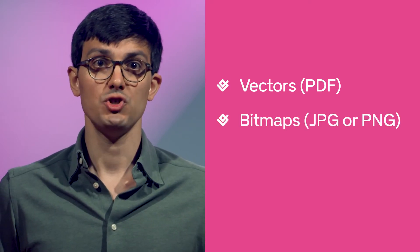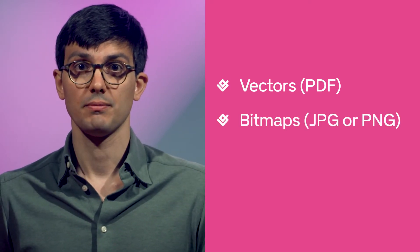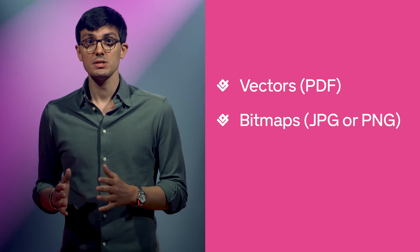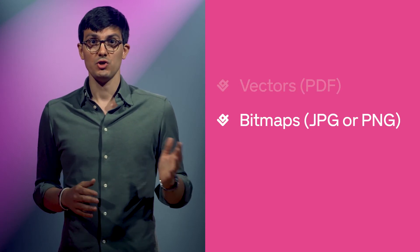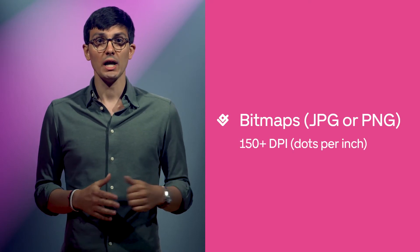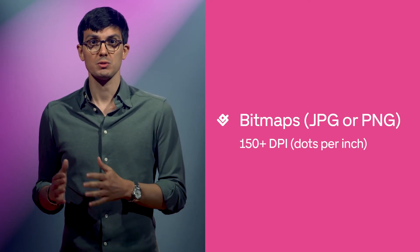Many of our customers have resolved color issues with their t-shirts by switching to sRGB, and we recommend you do the same. Now that we've addressed using the proper color schemes, let's talk about different types of files. There are two types of image files commonly used in print on demand: vectors such as PDF, and bitmaps such as JPG or PNG files. For apparel prints with Gelato, you must use JPG or PNG files with a resolution of at least 150 DPI, or dots per inch.